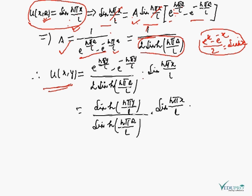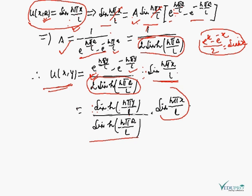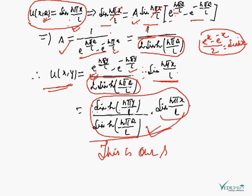Therefore the required solution is u(x,y) = A·sin(nπx/L)·[e^(nπy/L) − e^(−nπy/L)] = [2sinh(nπy/L)] / [2sinh(nπa/L)] · sin(nπx/L). Simplifying, u(x,y) = sinh(nπy/L) / sinh(nπa/L) · sin(nπx/L). This is the required solution.